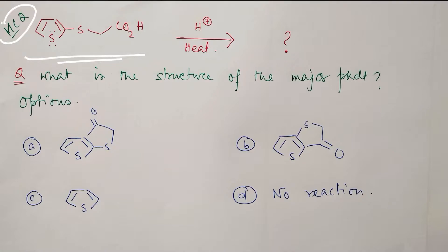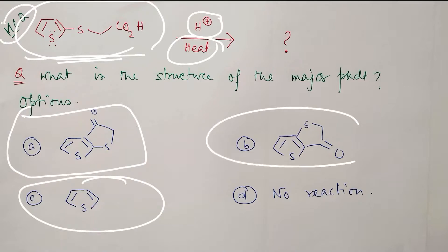This question is related to heterocyclic chemistry. This thiophene-containing moiety in presence of H+ and heat - what is the major product? You have to find out what is the structure of the major product. For that purpose I have provided four options in front of you.